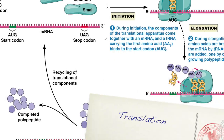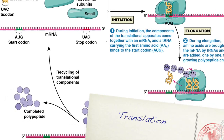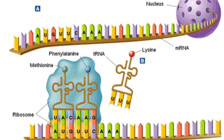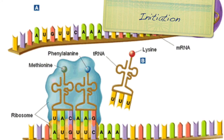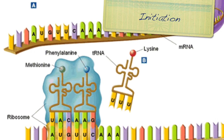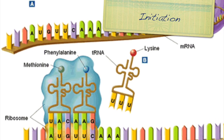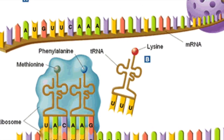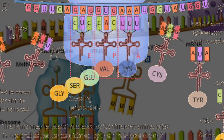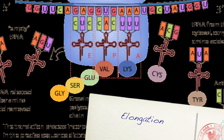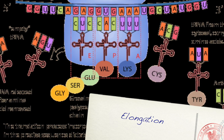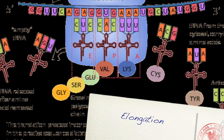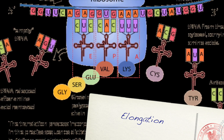Translation is a process where RNA creates proteins. Translation occurs in the cytoplasm and begins at the start codon AUG after mRNA attaches to the ribosome. The tRNA carries an amino acid and an anticodon to the ribosome, and the ribosome attaches the codon and the anticodon together.